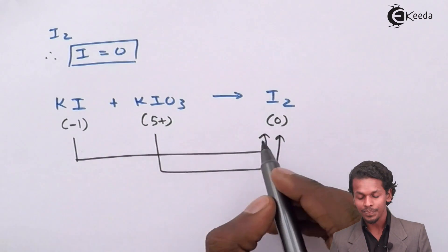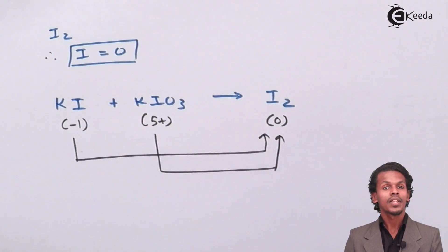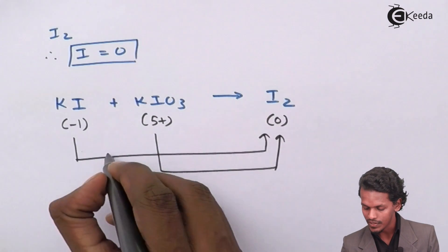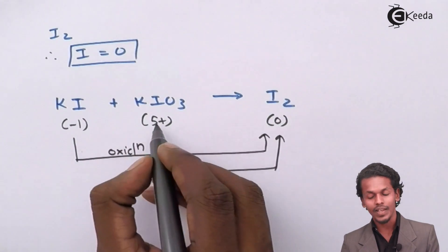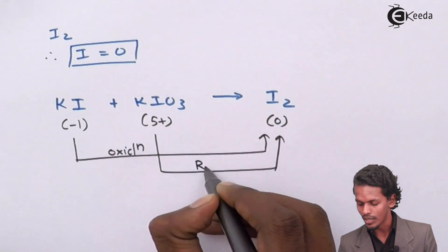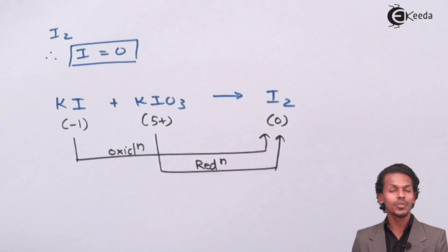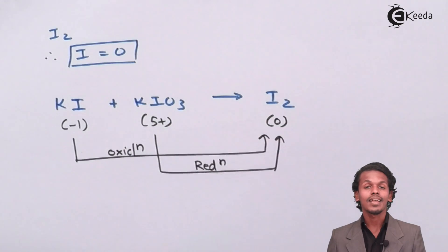This minus one is being converted into zero, that means it has lost electrons, therefore this is oxidation. And this plus five has gained electrons to convert into an oxidation number of zero. So therefore this kind of reaction is known as intermolecular reaction.